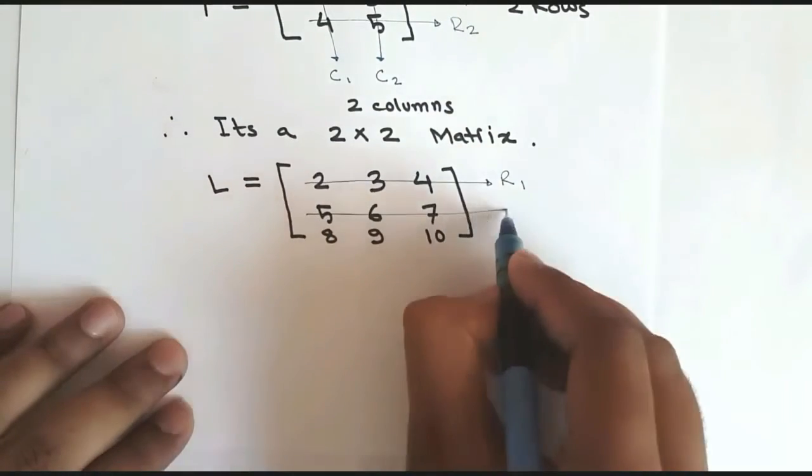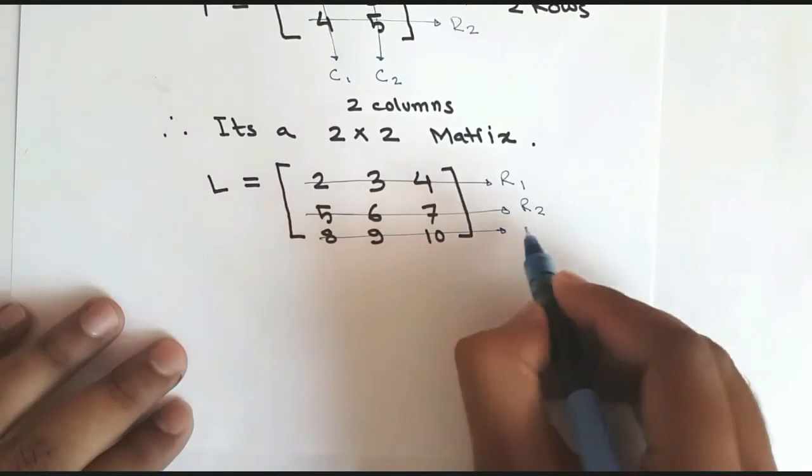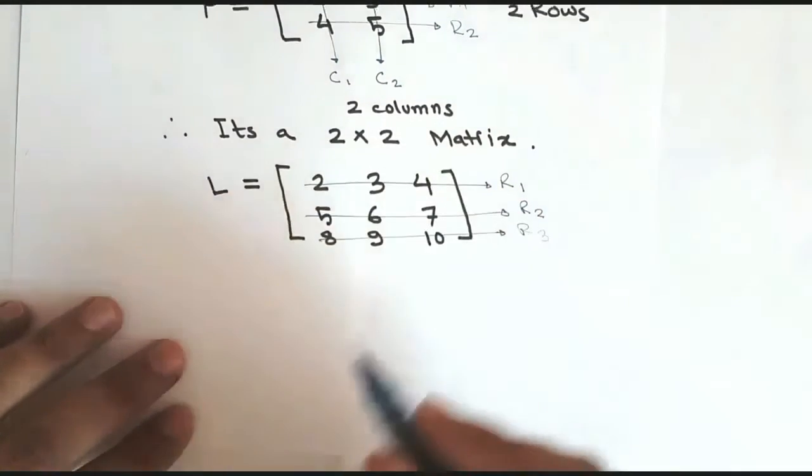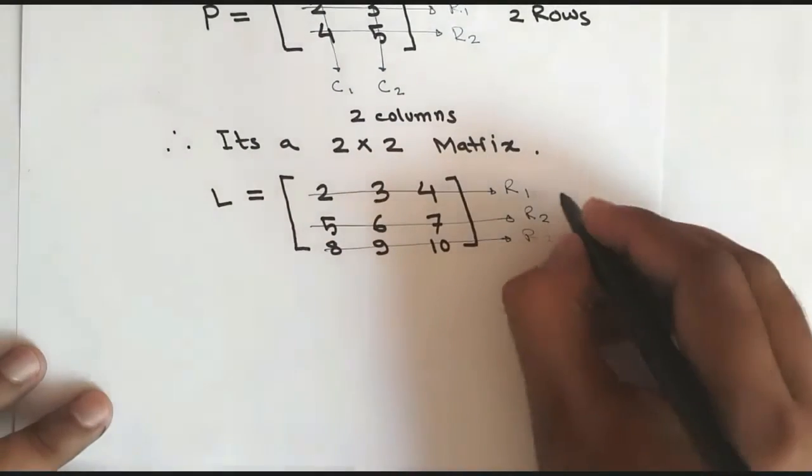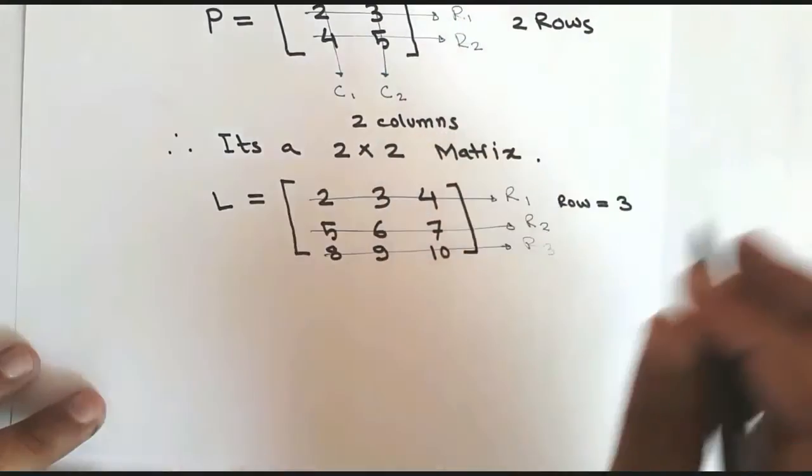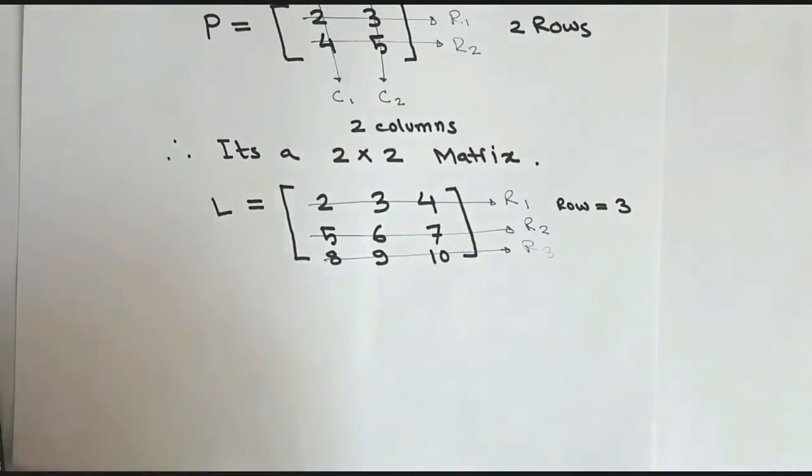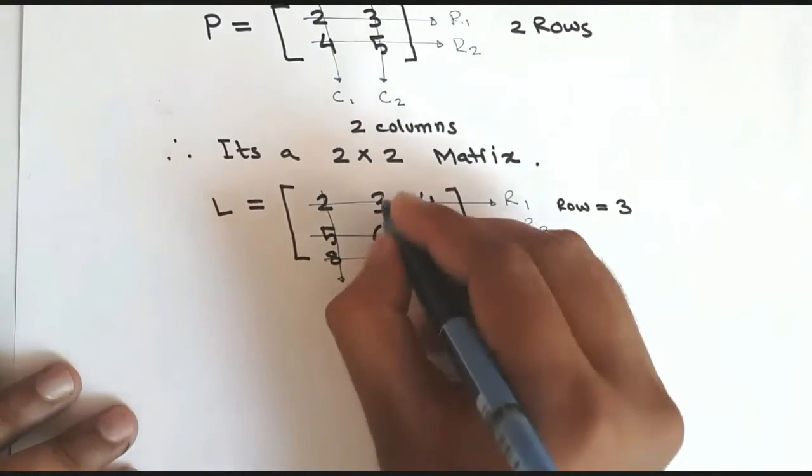Now moving on to three by three matrix. So we have three horizontal lines or three row vectors, so R1, R2, and R3. And we have, so the row vector is three, three rows means three row vectors.